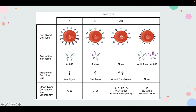They don't need to recognize A or B antigens as foreign, so they have no antibodies against them. Thus they are universal recipients — they can receive blood from type A, type B, AB, or O.